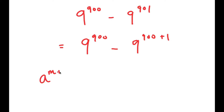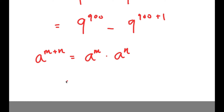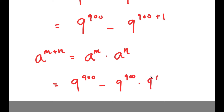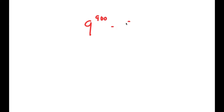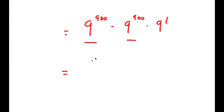Now I can use the exponential property: a to the power of m plus n is equal to a to the power of m times a to the power of n. So I get 9 to the power of 900 minus 9 to the power of 900 times 9 to the power of 1. These two terms both have 9 to the power of 900 in them, so I'm going to factor out 9 to the power of 900, giving me 9 to the power of 900 times 1 minus 9 to the power of 1.